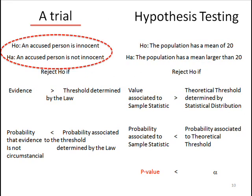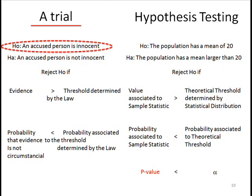In a trial, you have two hypotheses that compete: either the accused person is innocent, or they are not innocent — they are guilty. They cannot be true at the same time, and they cannot be false at the same time. Depending on the laws of different countries, you have something presumed from the start. In the US system, that would be presumed innocent. So the initial hypothesis is that an accused person is innocent. If nobody presents charges or brings evidence forth, this is the hypothesis we will keep.